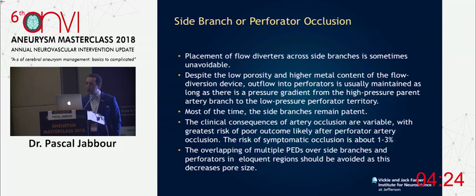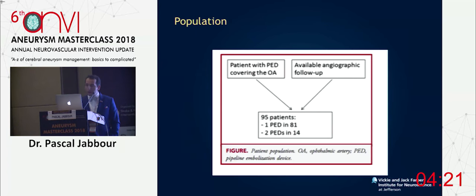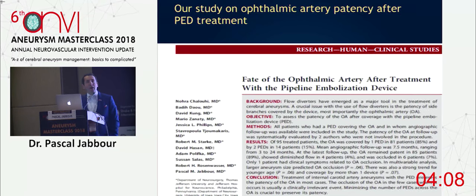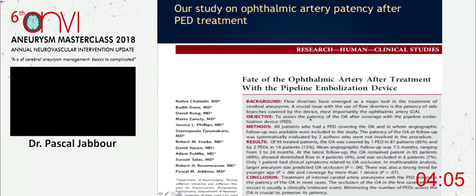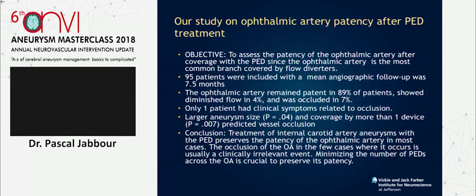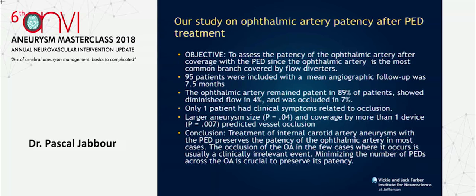What about side branch and perforator occlusion? In our paper on the fate of the ophthalmic artery, published in Neurosurgery, we looked at 95 patients with a mean angiographic follow-up of 7.5 months. The ophthalmic artery remained patent in 89% of cases, showed diminished flow in 4%, and was occluded in 7%. Only one patient had a clinical problem related to the occlusion — so yes, we see occlusion of perforators, but generally non-symptomatic.